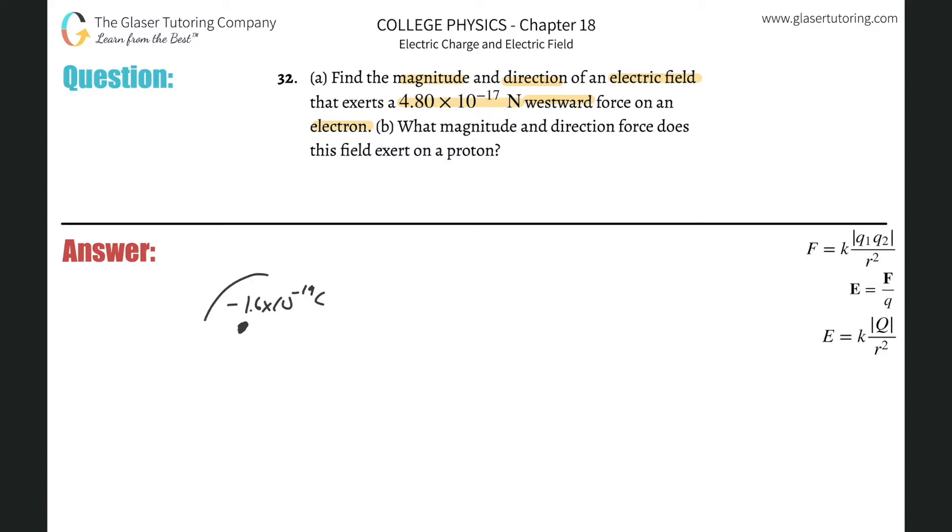We now know that there is a westward force on this electron. There is a force pointing in this direction. So there's a force here. Why is there a force? Well, something is pulling this electron, right? Something's pulling it or something's pushing it. You can think about it either way.